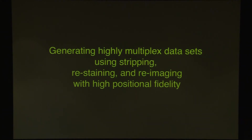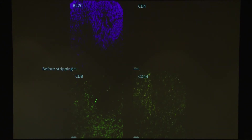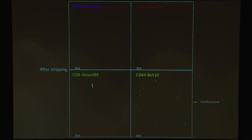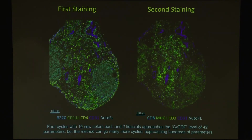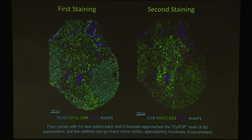We can go further. 12-plex or 14-plex at a time is not good enough. So there's a very mild stripping method that turns the initial picture into a clean image, with autofluorescence only. Then we can do iterative 10 or 12 color stains — keeping 10 as new colors and 2 as fiducials for alignment. In a few cycles, we're up to super-CyTOF levels with very high resolution.